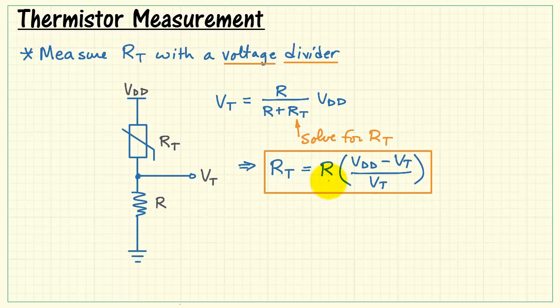As you look at the equation you see that there are three contributing elements: R, VDD, and V_T. V_T is our primary measurement while the other two serve as auxiliary measurements.